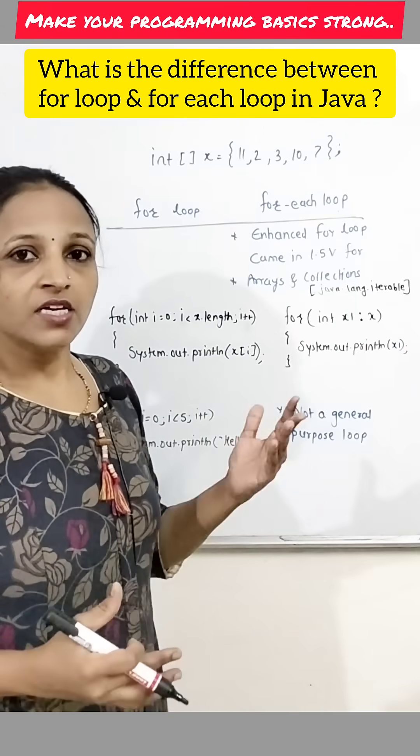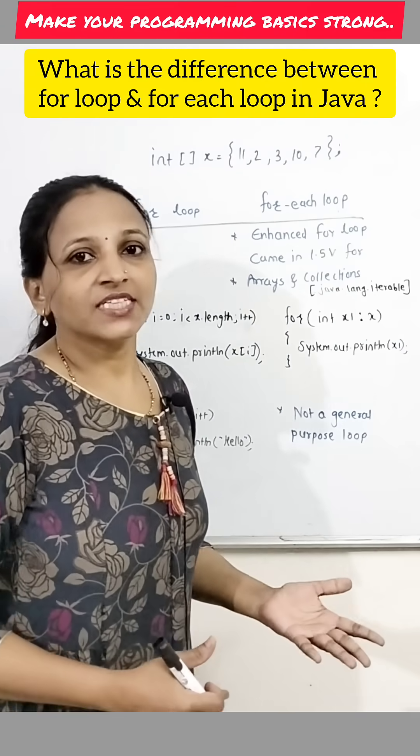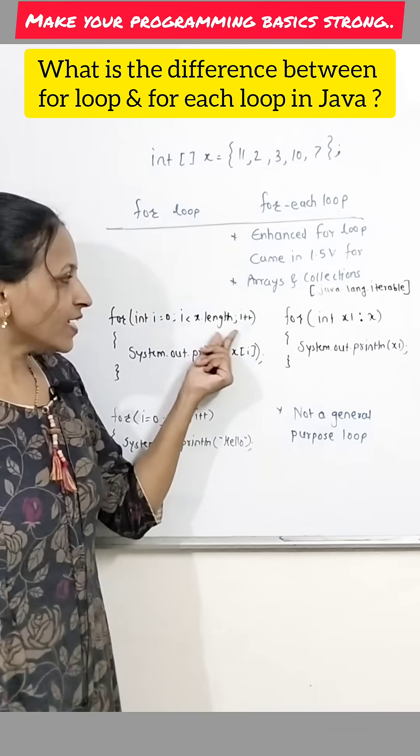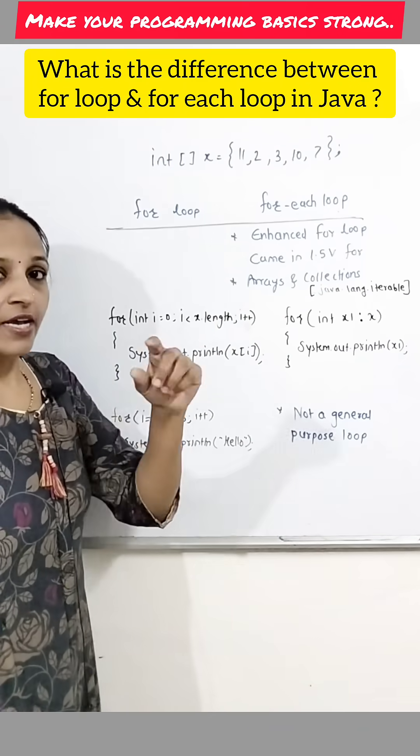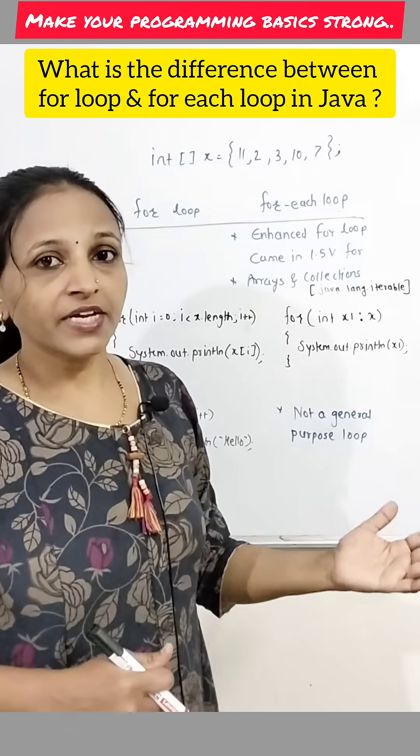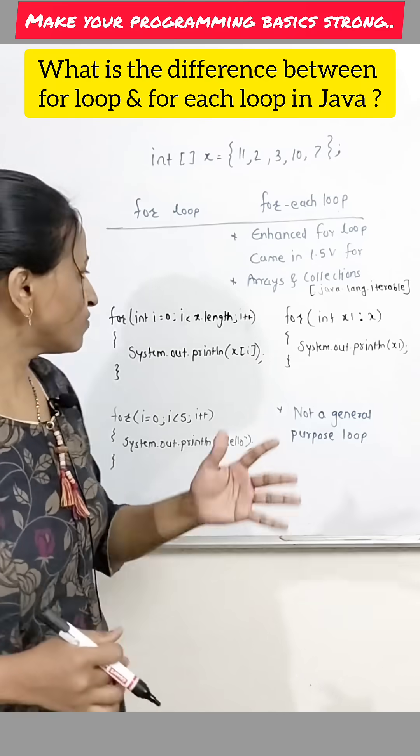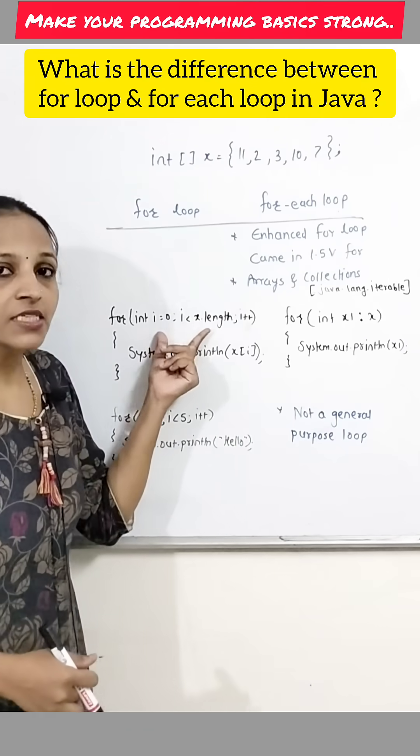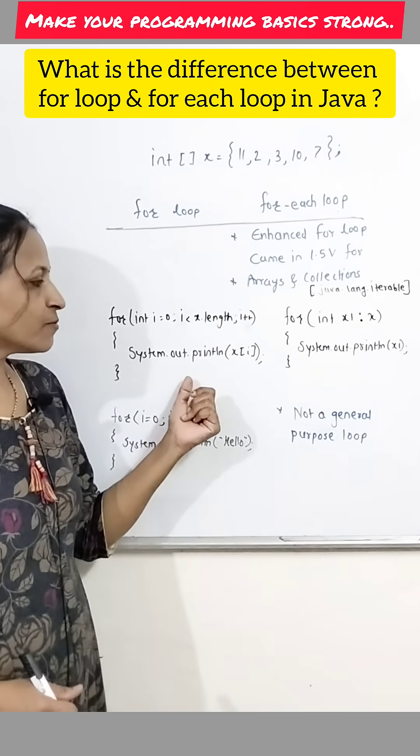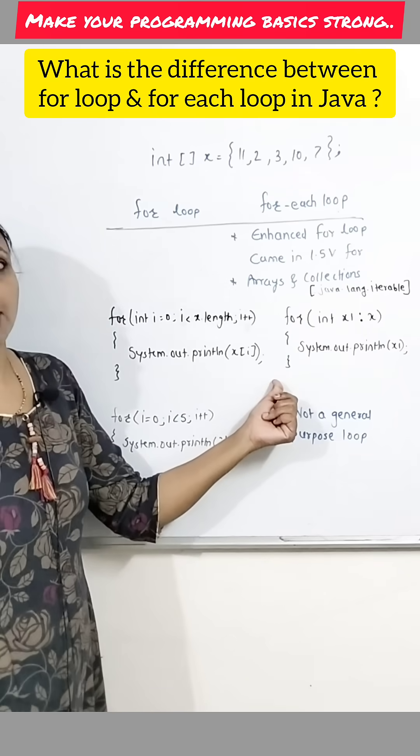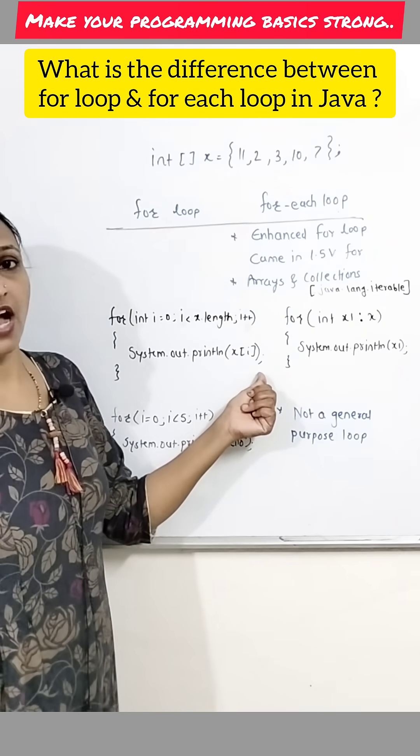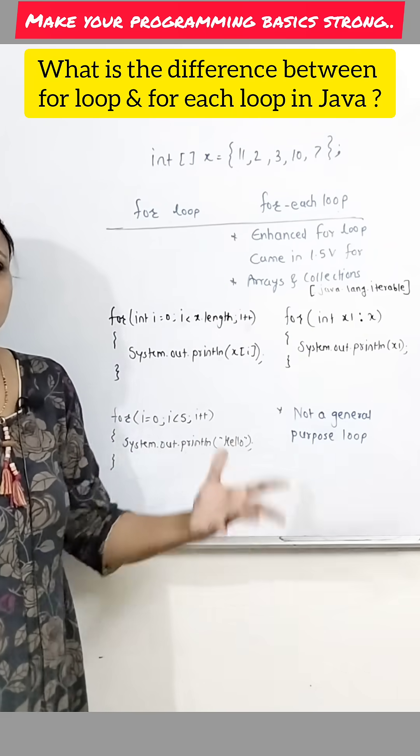See, length is a property of that array that will give you the number of elements in that array. That's why X dot length means index starts with 0 and ends with a size minus 1. That's why here the loop will be like this for i equals to 0, i less than X dot length, i plus plus. And I'm just displaying each and every element like X of i. Then here you will get array displayed.